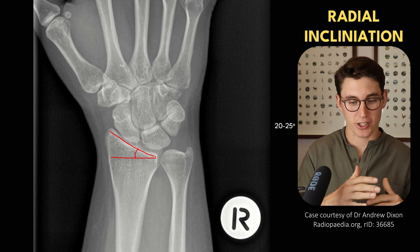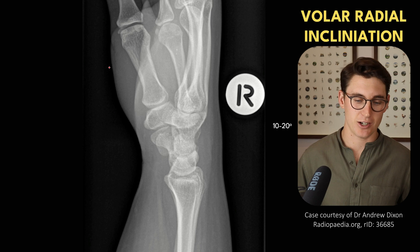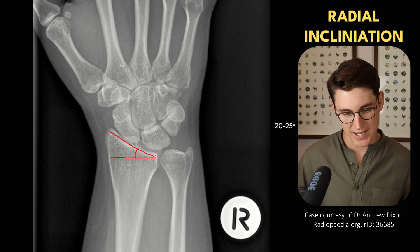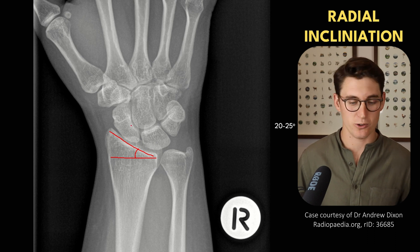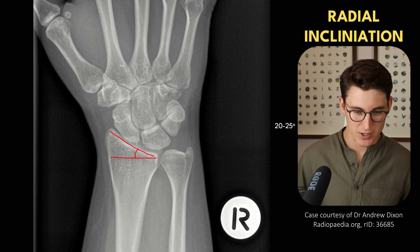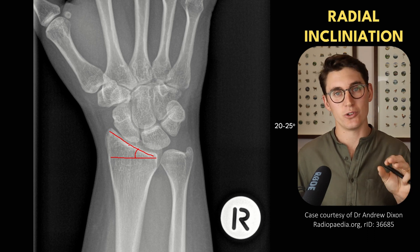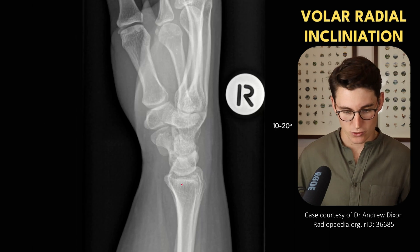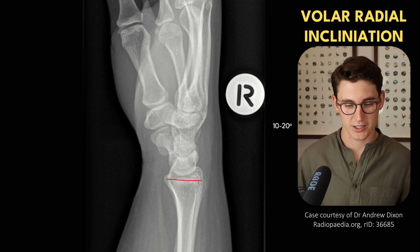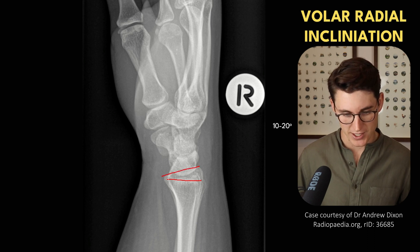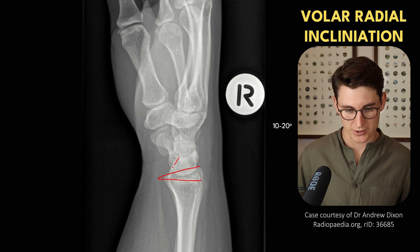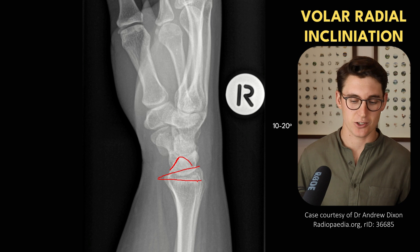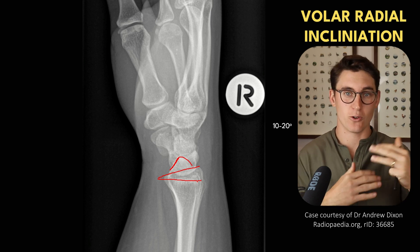Now we've looked at radial inclination on an AP view, we can also look at volar radial inclination on the lateral view. The scalloping of the end of the radius creates the articular surface for the lunate and scaphoid, and then we have the radial styloid heading upwards. When measuring volar inclination on the lateral view, we draw a line perpendicular to the shaft of the radius and measure the angle of the articular surface — not following the radial styloid. We want that angle to be between 10 and 20 degrees. Any disruption to that angle requires us to look for pathology.